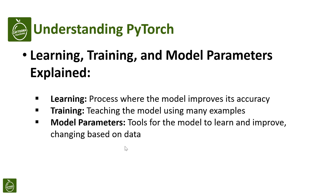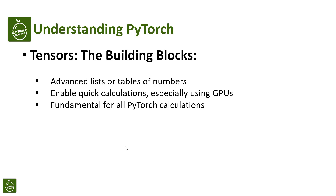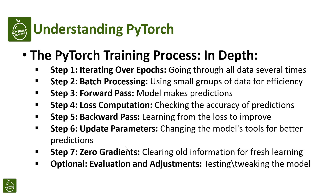These parameters change and get better as the model learns from data. Tensors are like advanced lists or tables of numbers. PyTorch uses them to do calculations quickly, especially with the help of a GPU, which is a part of your computer really good at handling lots of data. Tensors are super important for calculations in PyTorch.